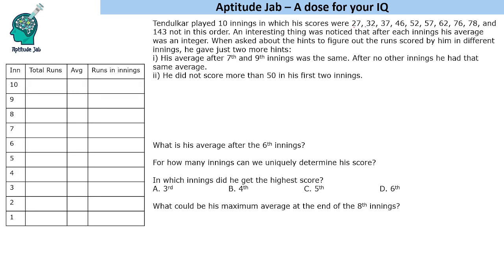Adding the scores: 59, 96, 142, 194, 251, 313, 389, 467, then 467 plus 143 gives 610. So he had a total score of 610 after 10 innings and his average was 61.